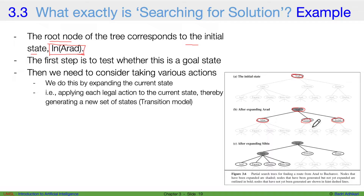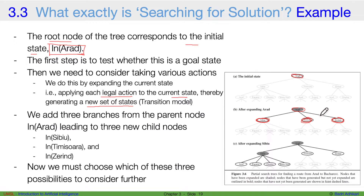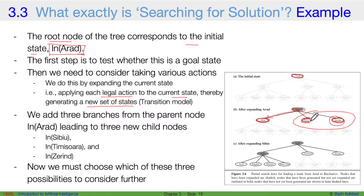We expand Arad and look at all possible actions that we can take. That is, we apply each legal action to the current state, thereby generating a new set of states. The possible states that the agent can go to are these three. So we add three branches from the parent node, resulting in three child nodes: Sibiu, Timisoara, and Zerind. Now we must choose which of these three possibilities to consider further.